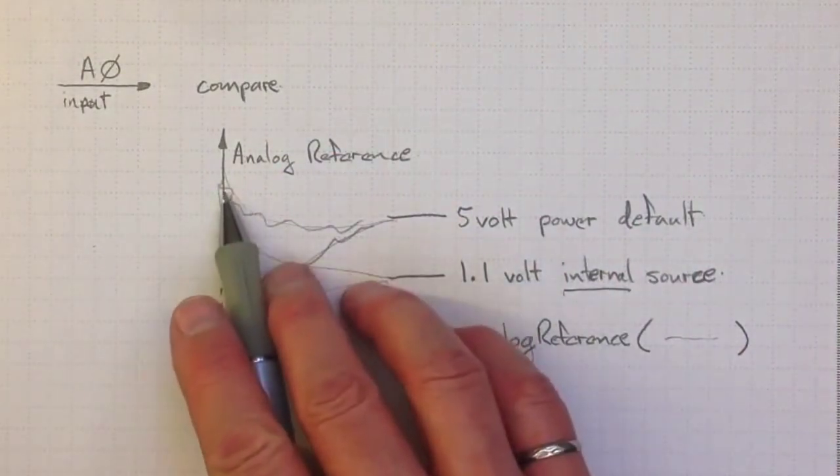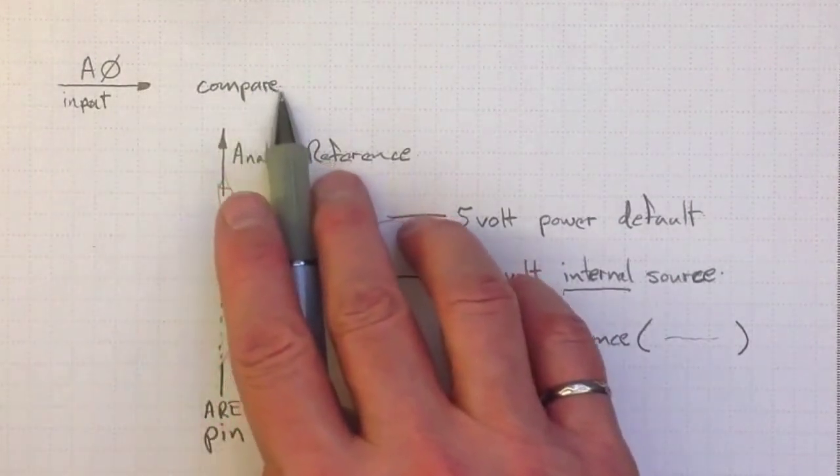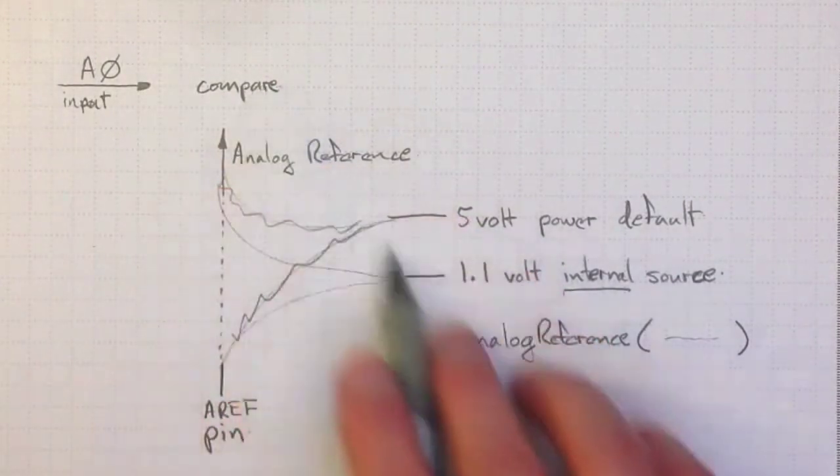So you'll use a 1.1 volt comparison, so a 1 volt value will give you something like 900 after the conversion, almost full scale.